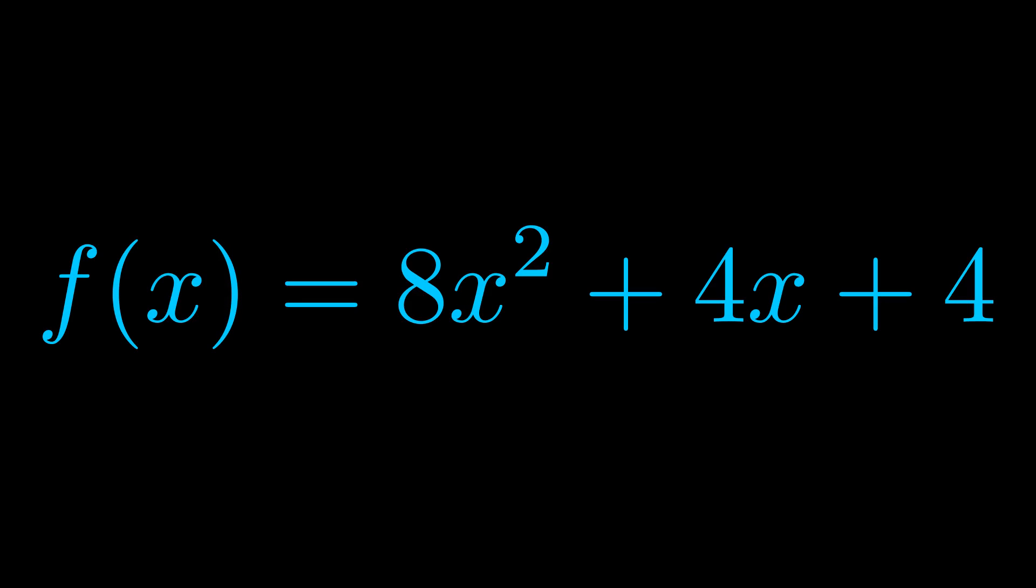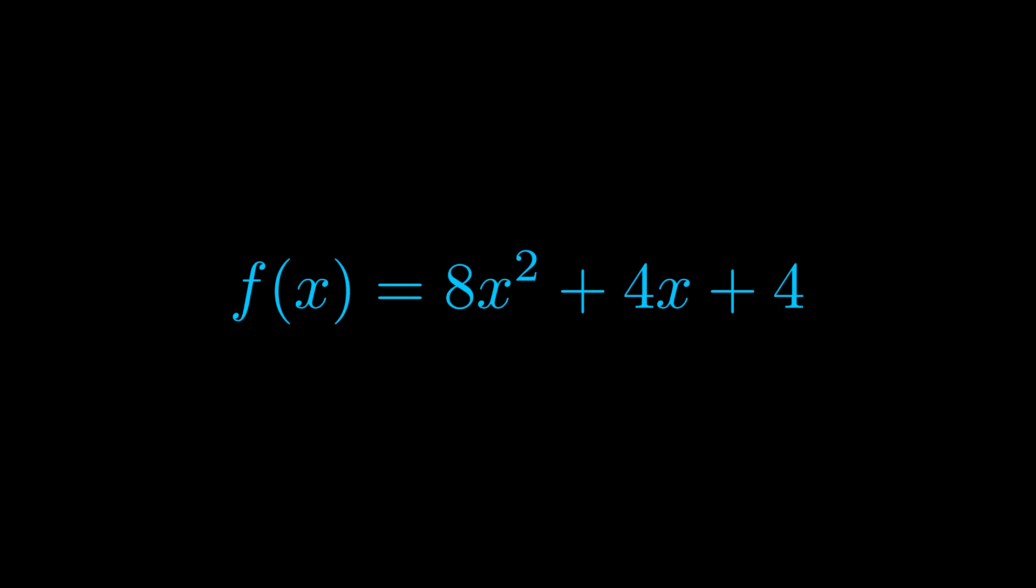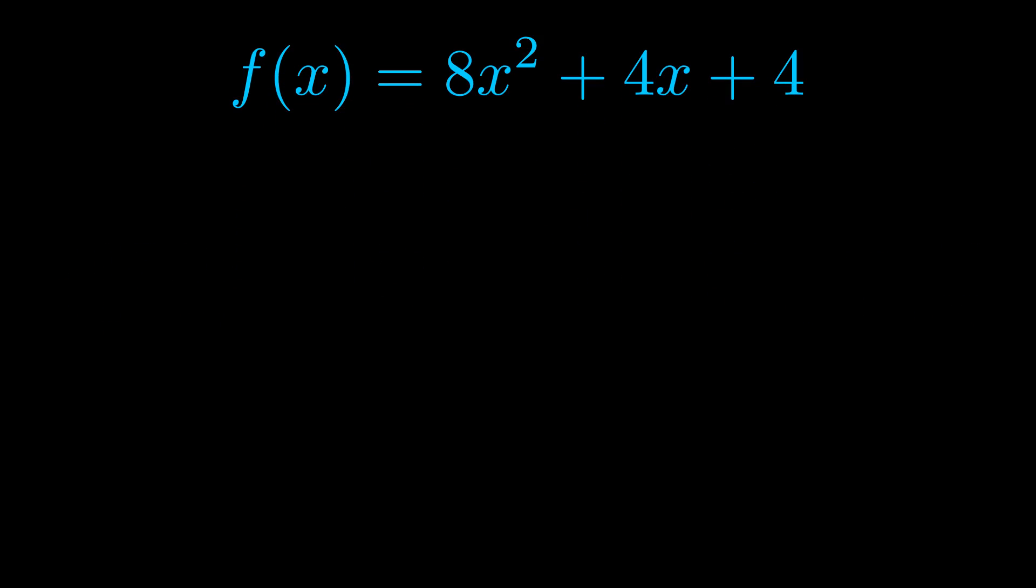We'll see an example now. We can see here that what we're going to do is take any exponent that's on an X, now highlighted in green, and move it to the front.